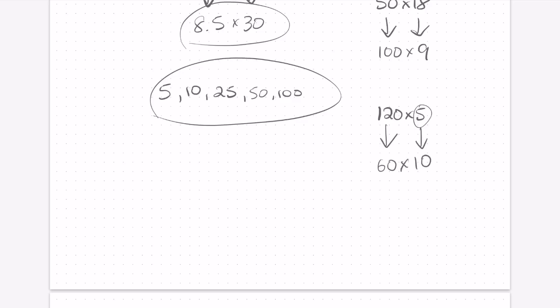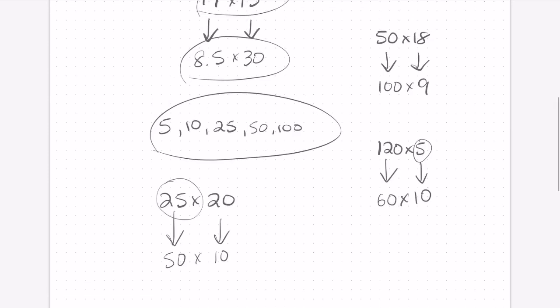Or another one might be 25 times 20. Again, we see that 25 and we know that that's an easy one to double to make 50. And then we just half the 20 to make 10. So these are just some examples of problems that would suit themselves well to the halving and doubling strategy.